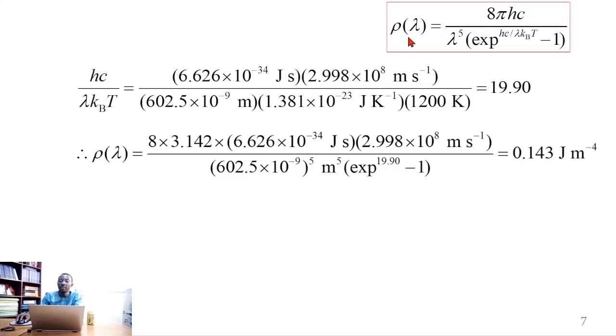So to obtain the entire energy distribution, we substitute this in here and substitute the rest of the other variables or parameters. Here, this is 8, this is pi, and this is h, and speed of light, and this is the median wavelength raised to the power of 5, and this is exponential, and minus 1. The whole of this evaluates to 0.143 joules per meter to the fourth power.